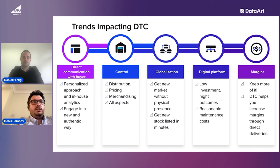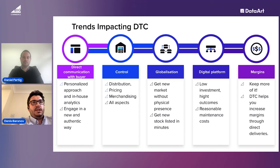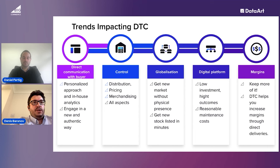The second trend is control. When you work with third parties, you have limited control — perhaps only half the touchpoints in the customer journey. If you go direct-to-consumer, you have full control over pricing, distribution, merchandising, and any other aspects. You can play with those parameters freely. For example, if you're entering a new market, you can reduce pricing — which isn't easy when working with third-party providers who don't want to disrupt market marginality. As a direct market owner, you can do that easily to gain additional market share.